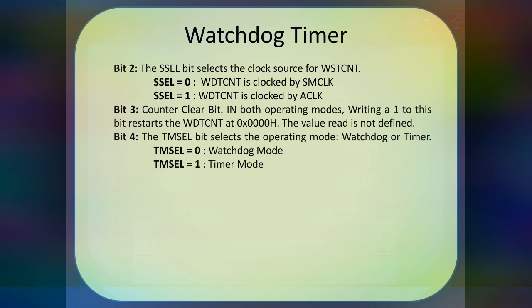Bit number 4 is TMSEL — the timer mode select bit. This bit selects the operating mode of the watchdog timer. If TMSEL is 0, that is watchdog mode, which is the primary function. If it is 1, it goes into interval timer mode operation.